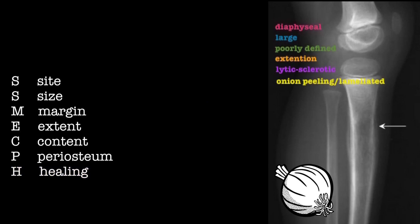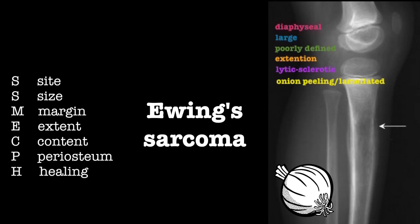So the lesion is a large, extensive diaphyseal lesion with poorly defined margins, onion peeling of the periosteum, and with a lytic and sclerotic appearance. This is typical of Ewing's sarcoma.